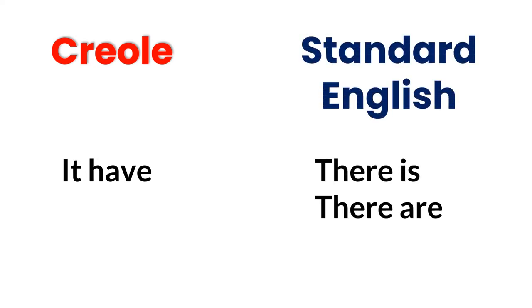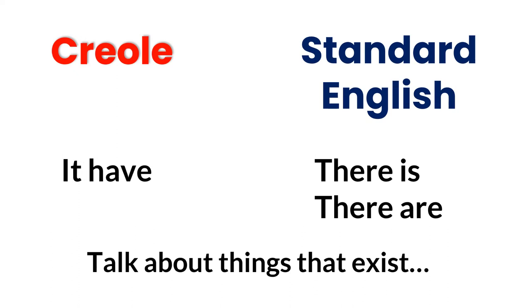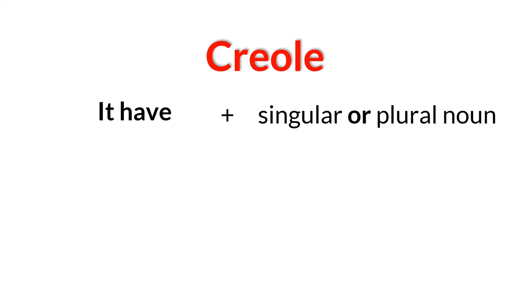The Creole structure "it have" and the Standard English structures "there is" and "there are" are both used to talk about things that exist. In the Creole, we use "it have" plus a singular or plural noun. Fun fact: "it have" is a direct translation of the French "il y a".